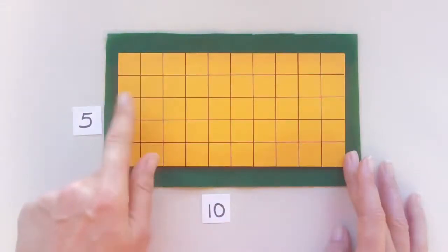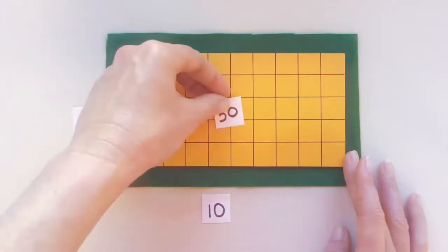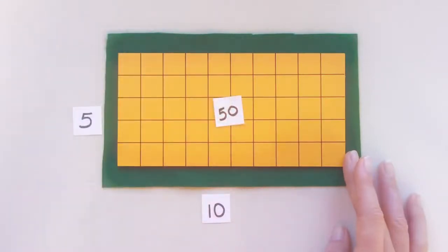Instead of counting all of these squares we can say 5 times 10 equals... do you know what that is? Yeah, 50, and that's the area of our rectangle.